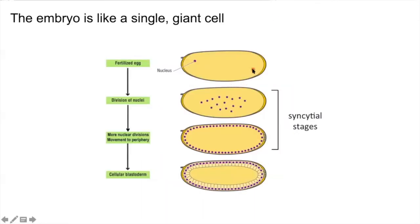The embryo starts off as a single giant cell with a single nucleus. The nucleus then divides and divides until the embryo is filled with hundreds of nuclei. The nuclei then migrate to the surface of the embryo. Then, after about two hours into development, individual cells form around each of the nuclei. Now, let me show you some videos of embryonic development.